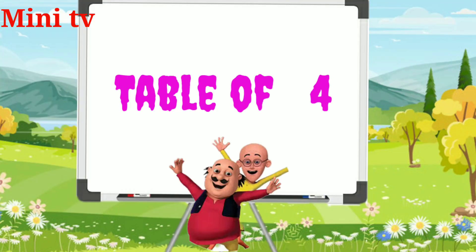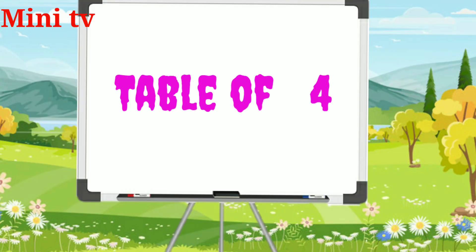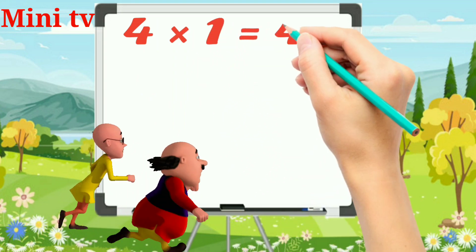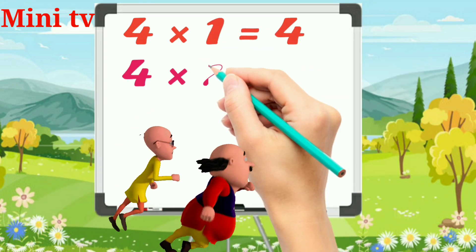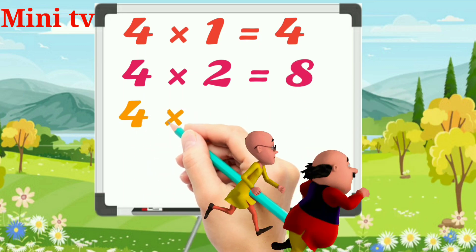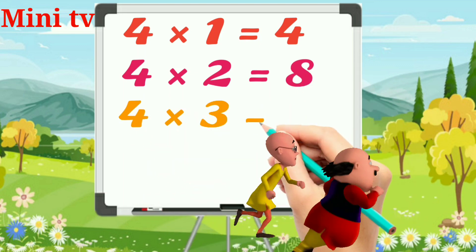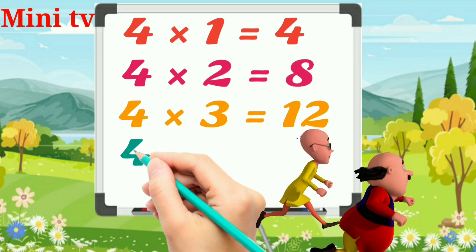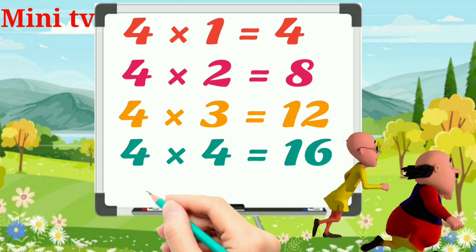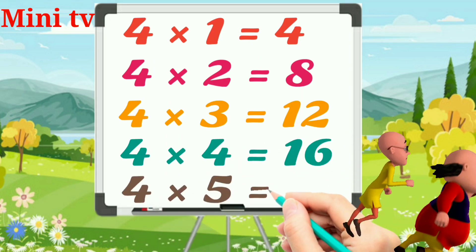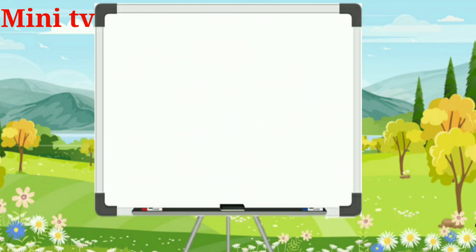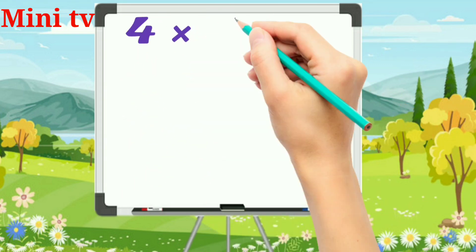Table of 4. 4 ones are 4. 4 twos are 8. 4 threes are 12. 4 fours are 16. 4 fives are 20.